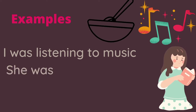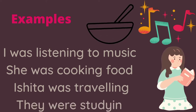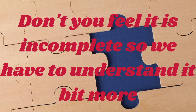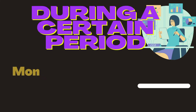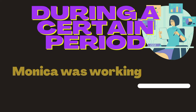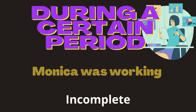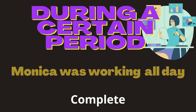I was listening to music. She was cooking food. Ishita was traveling. They were studying. But these feel incomplete. The first category is 'during a certain period.' For example: Monika was working all day. By adding 'all day,' the sentence becomes complete and explains the duration properly.